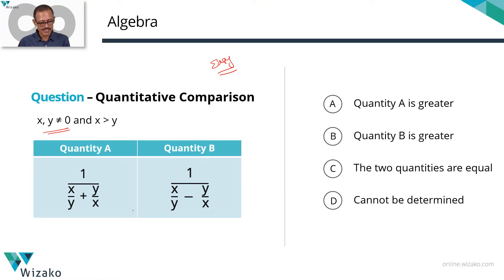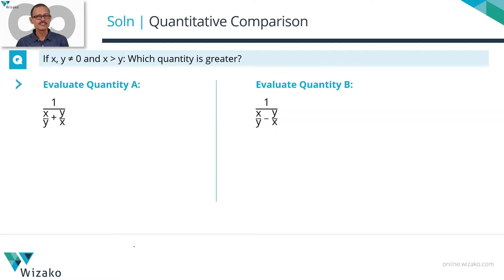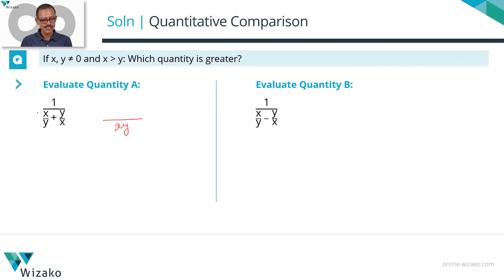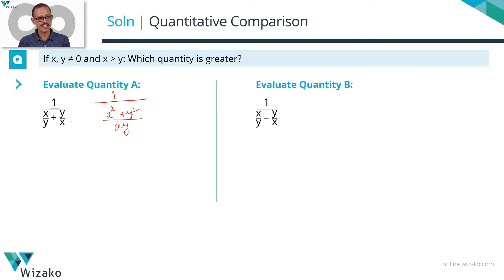I'm going to evaluate and simplify these two quantities. Starting with Quantity A: x and y are the denominators, so x·y will be the common denominator. The left-hand side numerator becomes x² and the right-hand side numerator becomes y². So we have 1 divided by (x² + y²) / (x·y).